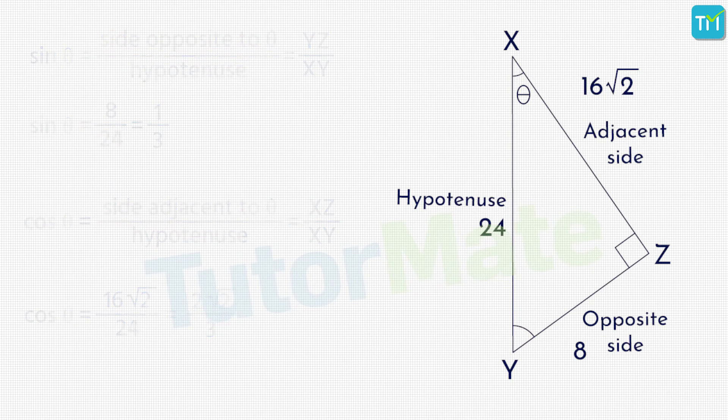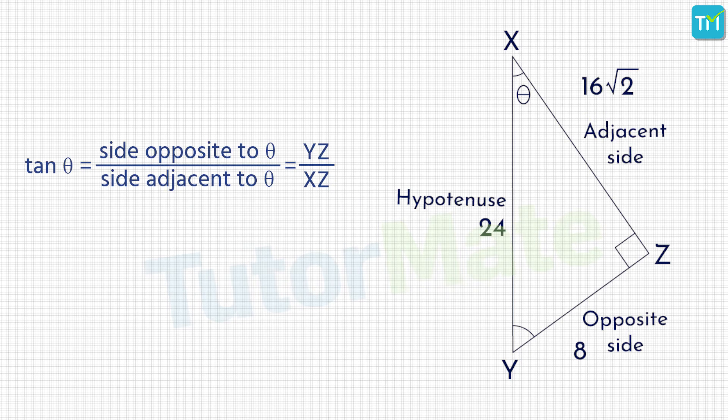Then, we know that tan θ is defined as opposite upon adjacent side, and that will be equal to YZ upon XZ. Substituting the lengths of these sides, we will get tan θ as 8/(16√2). On dividing the numerator and denominator by 8, the expression is reduced to 1/(2√2). So, tan θ = 1/(2√2).